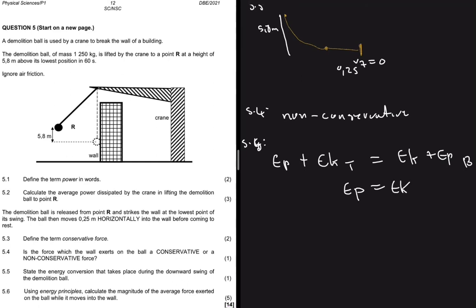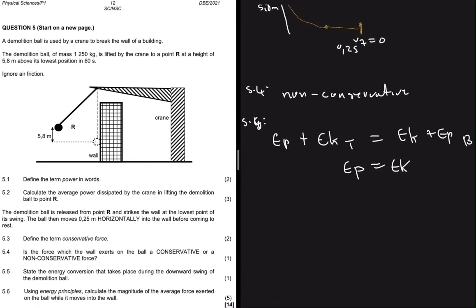The energy conversion is potential energy to kinetic energy. 5.6 says using energy principle calculate the magnitude of the average force exerted on the ball while it moves into the wall. If you've watched other of my videos, I always say that usually 5.3 helps you answer 5.4, and then 5.4, 5.5, so on and so on.